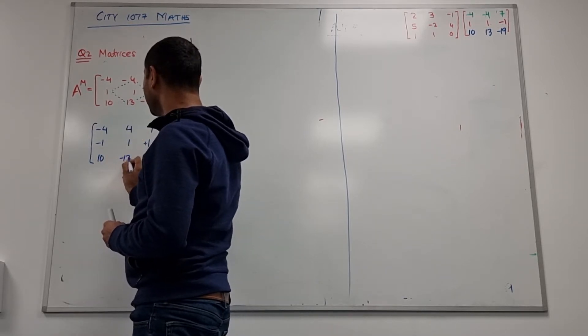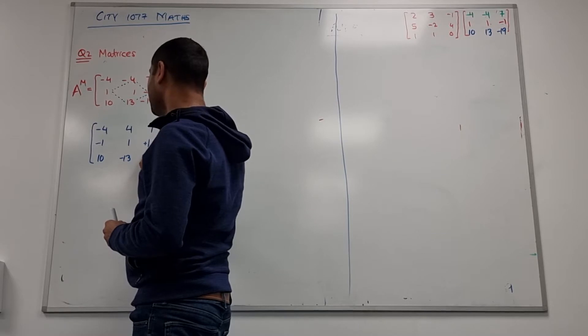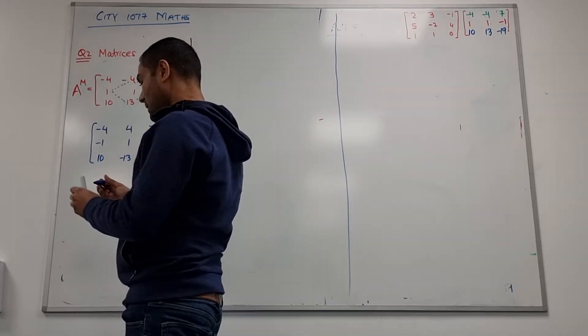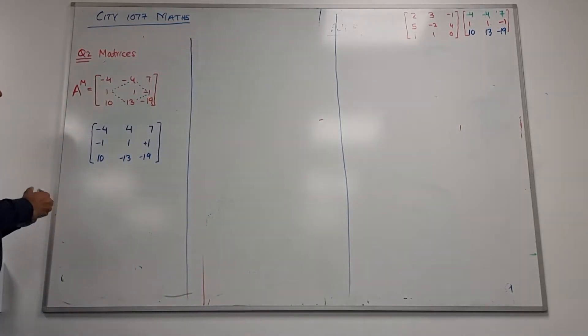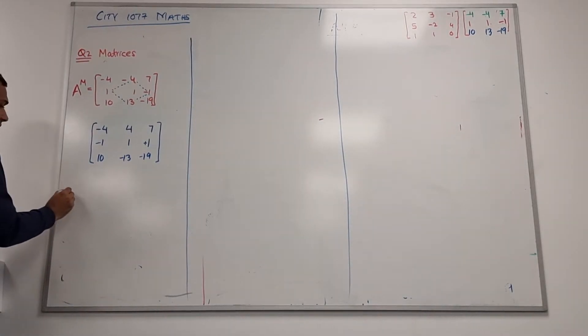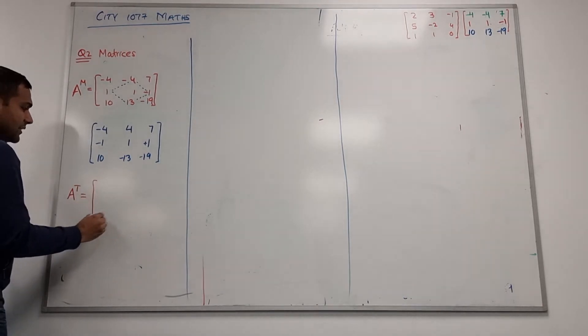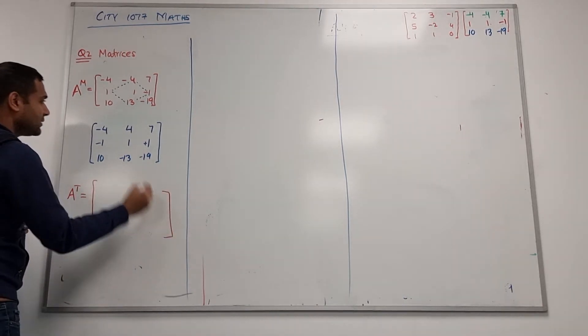That 10 remains as it is, the 13 becomes a minus 13, minus 19 as it is. After that we transpose. After that we transpose and I call this matrix as A transpose.